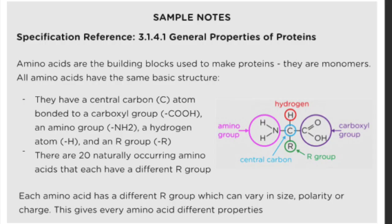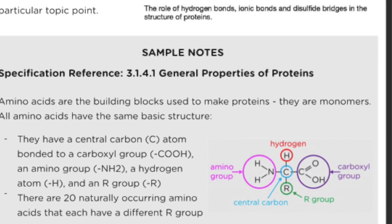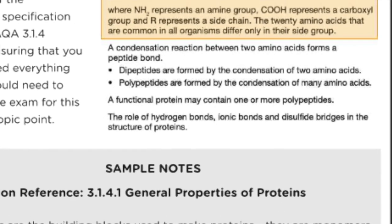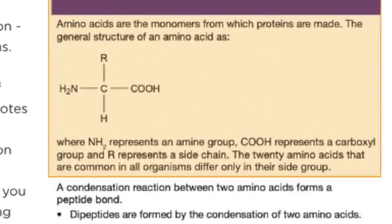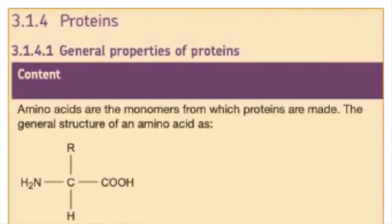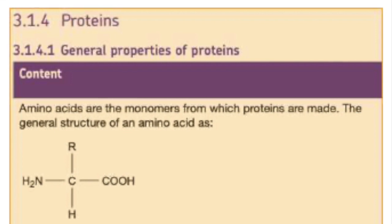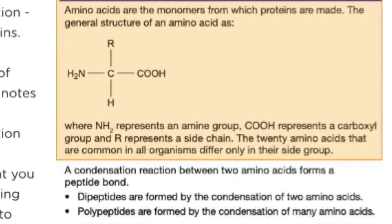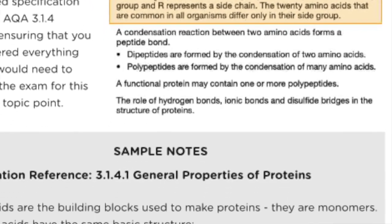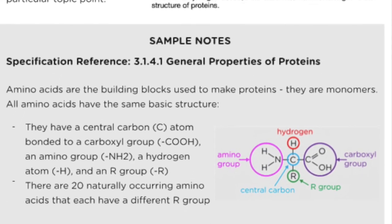Once you have your specification document, you can then use it to start making notes. Here is an example of how you might make notes based off the highlighted specification points for AQA 3.1.4 proteins. Going through this process will ensure that you have a comprehensive set of notes covering everything you need to know for the exam without missing any specification points.